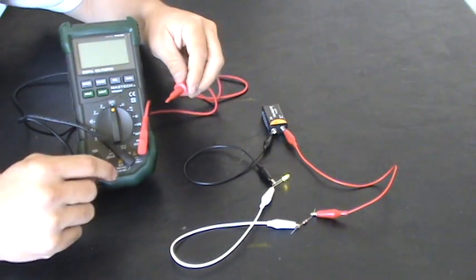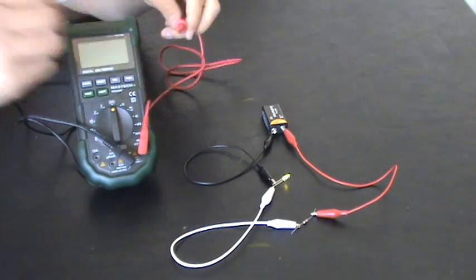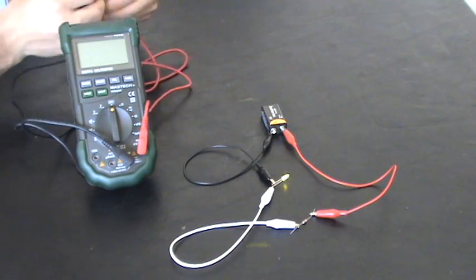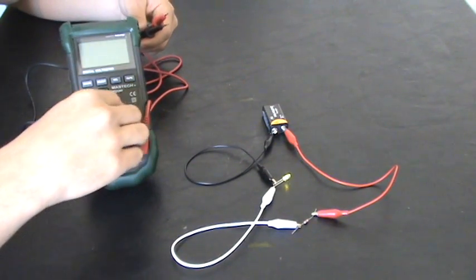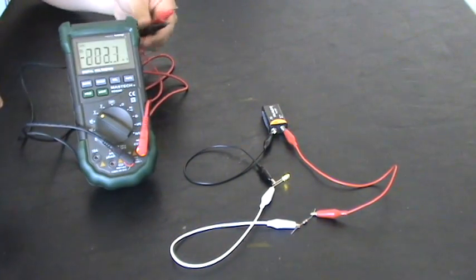Now plug your leads in to comm and voltage respectively. And the next thing that you're going to want to do is turn your multimeter on DC voltage.